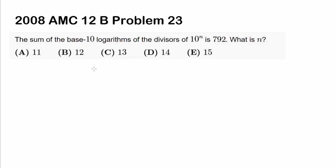Let's try out 2008 AMC 12B problem 23. The sum of the base 10 logarithms of the divisors of 10 to the nth power is 792. What is n? It's a very short question, but there's a lot into it, so let's get to it.